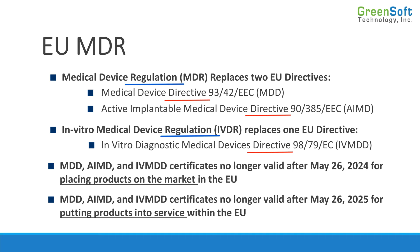It's worth noting these are regulations, not directives. A directive is issued by the European Union and individual member states must then enact national legislation — the actual laws you comply with. A directive isn't a law itself; it directs member states to create laws. A regulation, however, is an EU-level law and can be enforced at the EU level. Directives are legislated and enforced at the member state level; regulations are legislated and enforced at the EU level.